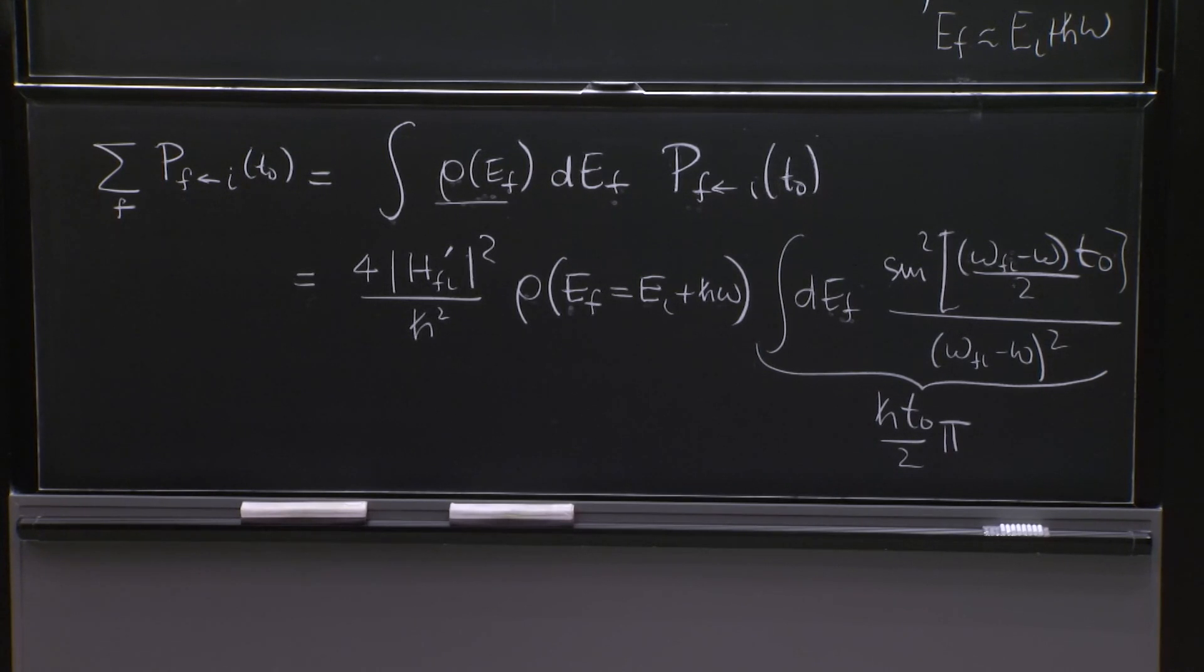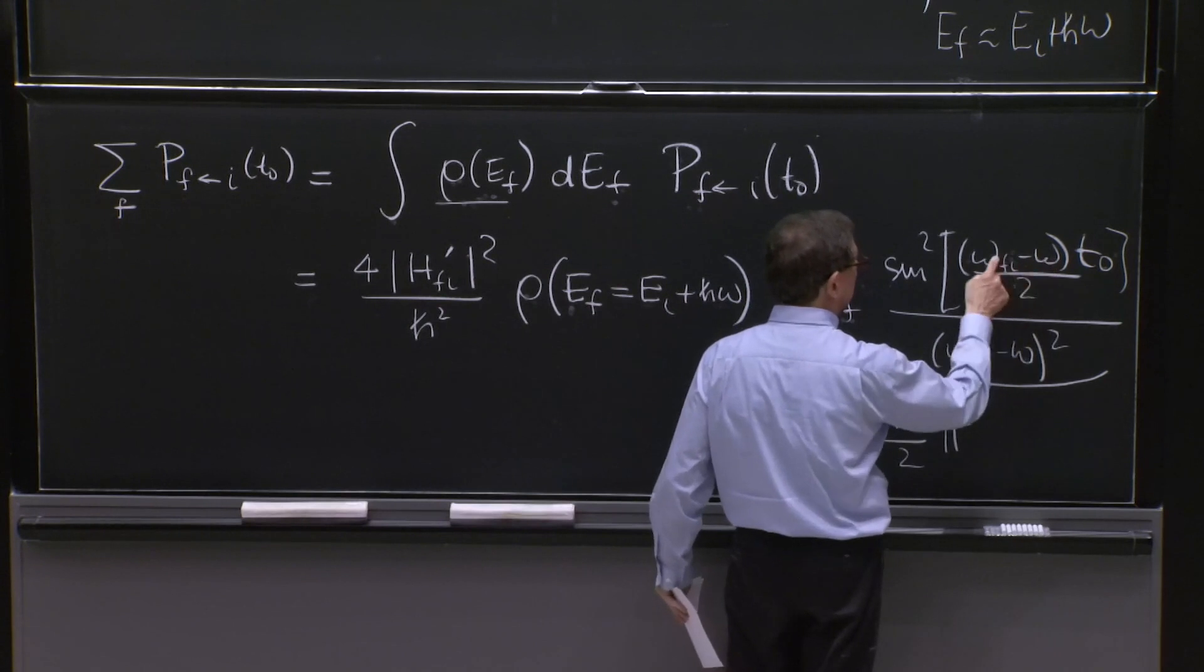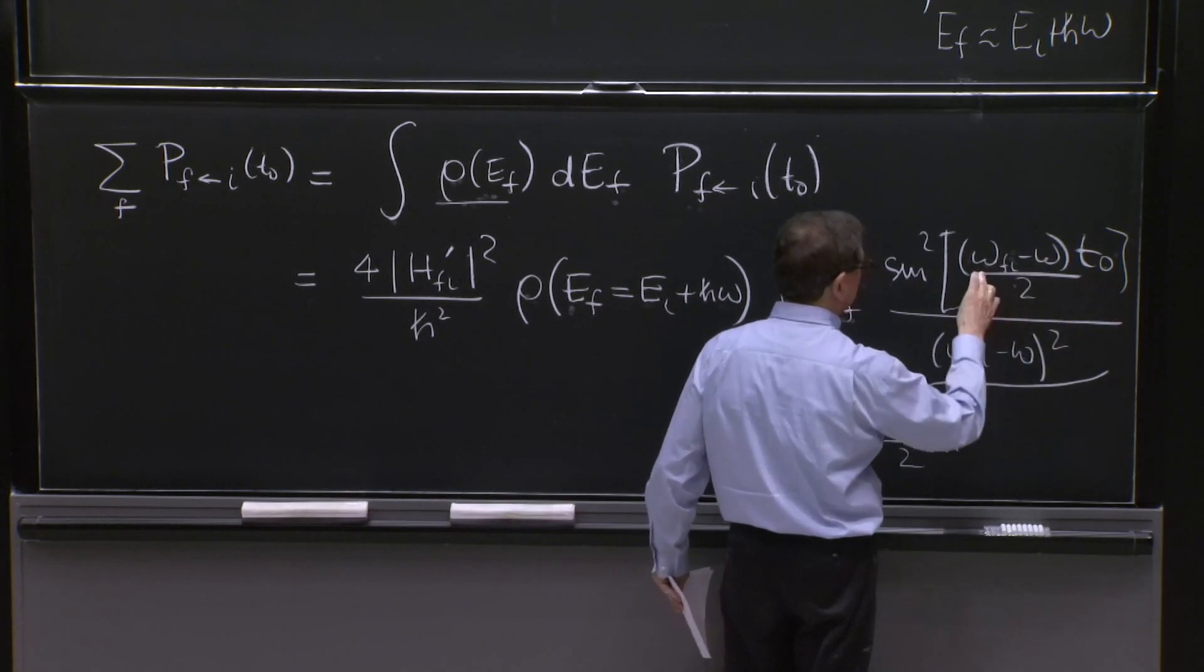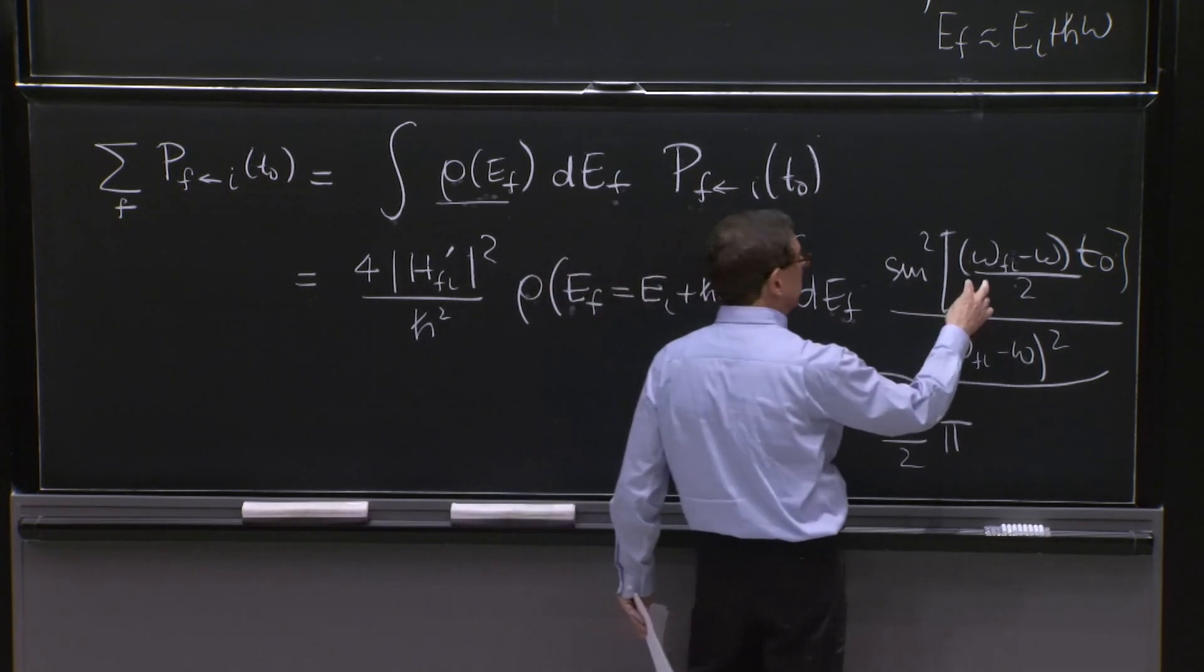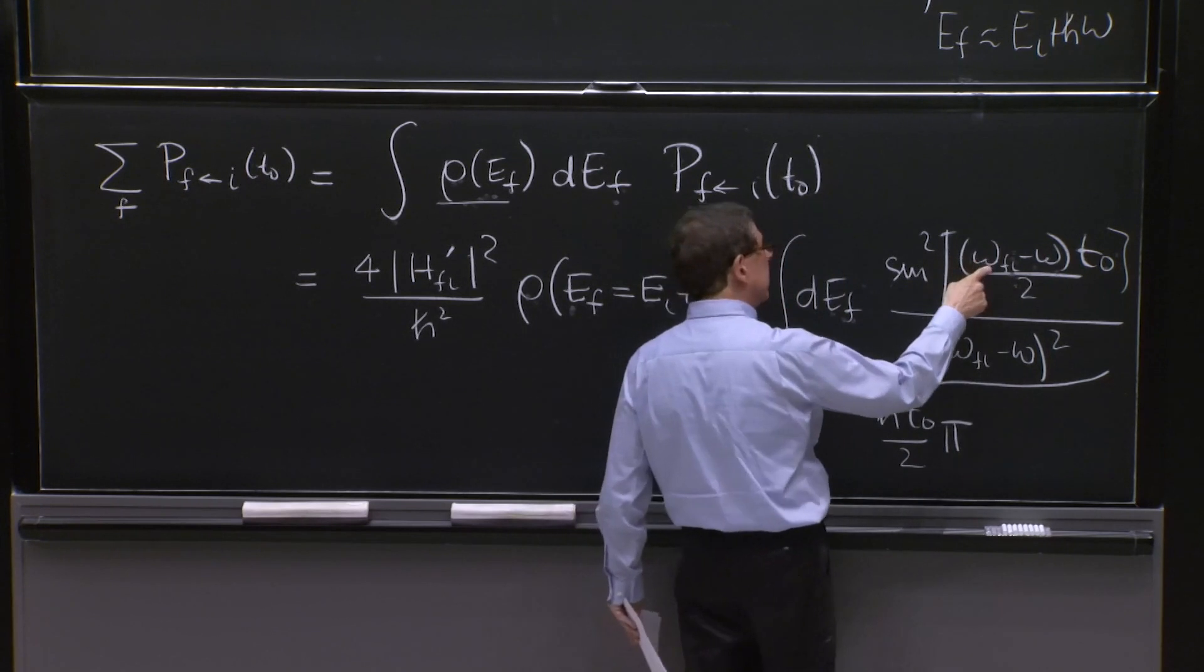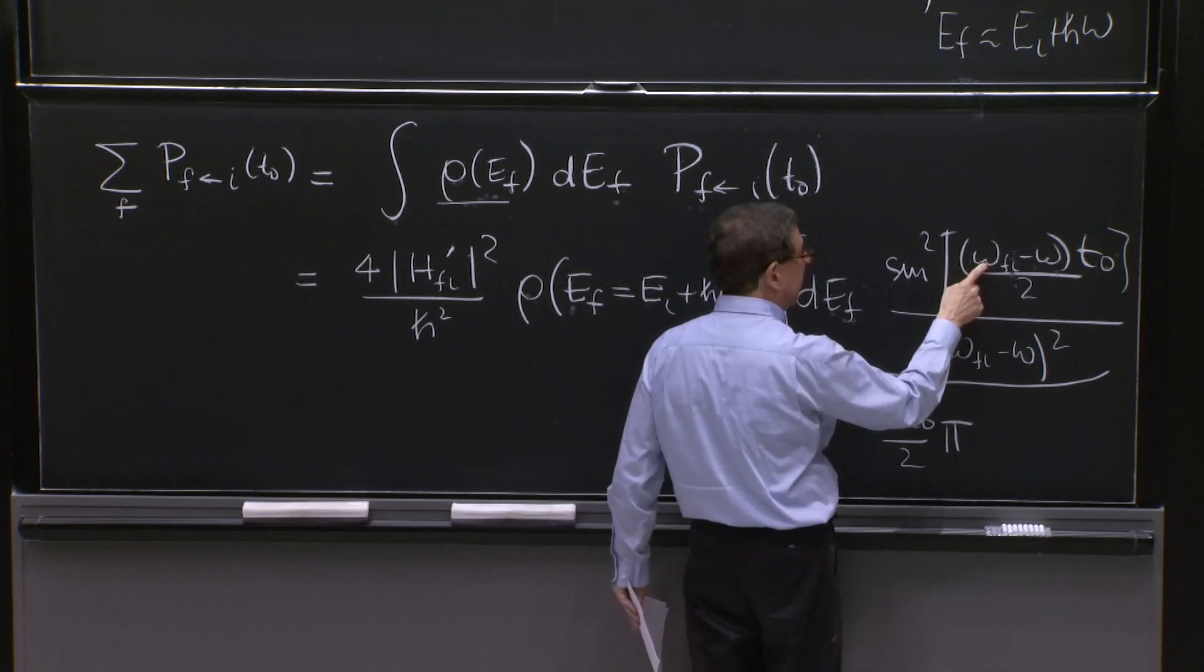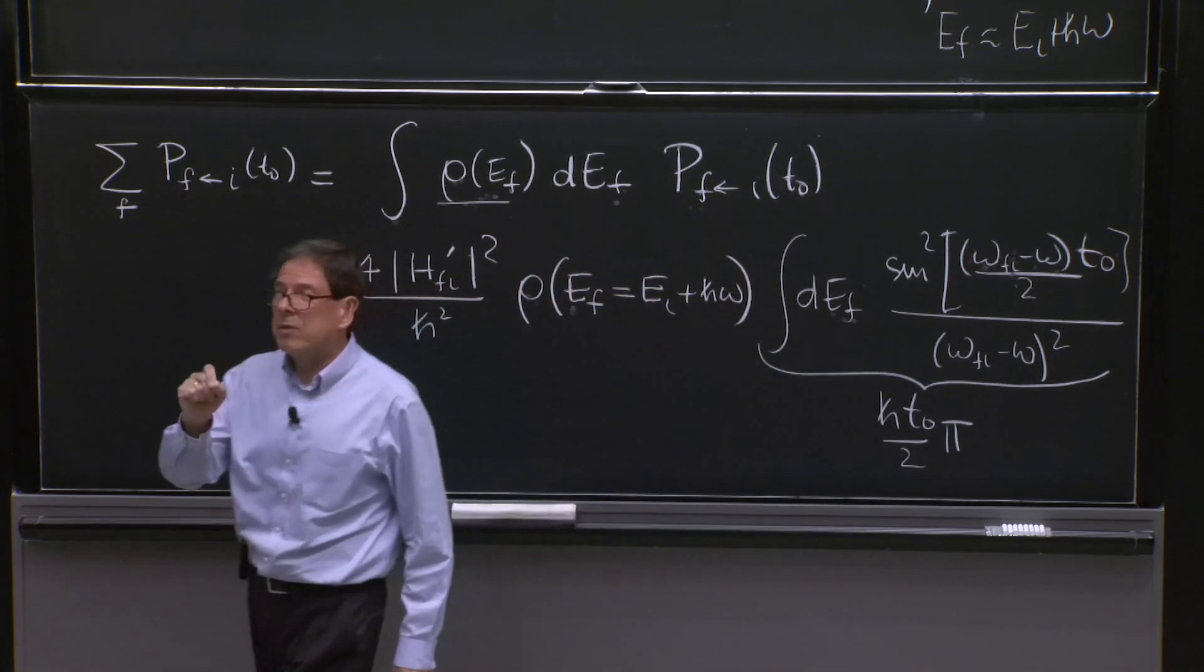This integral gives you h bar linear in t naught over 2 pi. When you study this, you will have the notes. And you can review it. If you take a note, you will see that it's exactly the same integral we had last time.